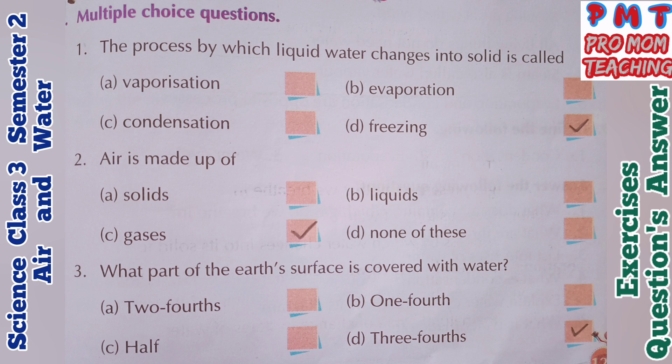Multiple choice questions. First: the process by which liquid water changes into solid is called — freezing (D). Second: air is made up of — gases (C). Third: what part of the earth's surface is covered with water? — three-fourth (D).